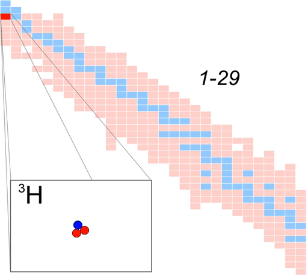Tritium has an atomic mass of 3.0160492 u. Diatomic tritium is a gas at standard temperature and pressure. Combined with oxygen, it forms a liquid called tritiated water. Tritium's specific activity is 9,650 curies per gram. Tritium figures prominently in studies of nuclear fusion because of its favorable reaction cross-section and the large amount of energy produced through its reaction with deuterium.